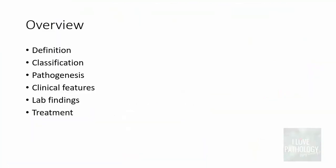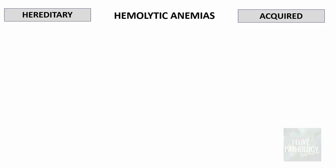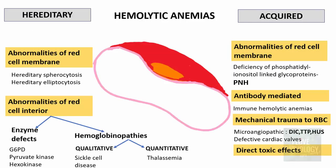This topic will be discussed under various headings. Let's get back to the classification of Hemolytic Anemias. In the previous part we discussed all the hereditary Hemolytic Anemias and PNH, which is an acquired Hemolytic Anemia. In this part I shall be talking about Immune Hemolytic Anemias.